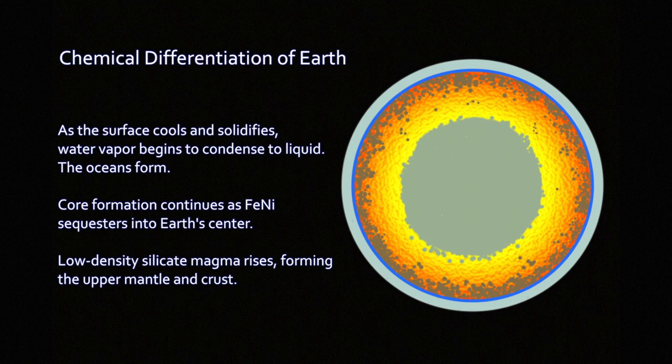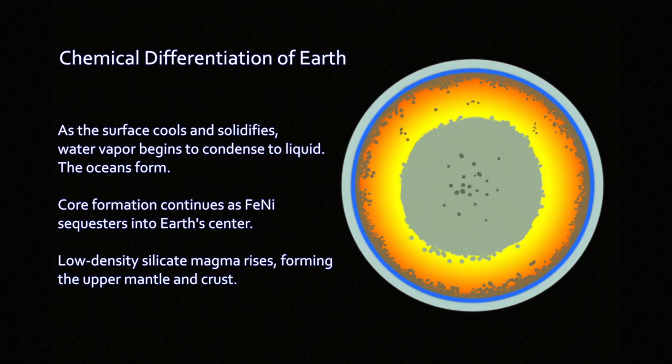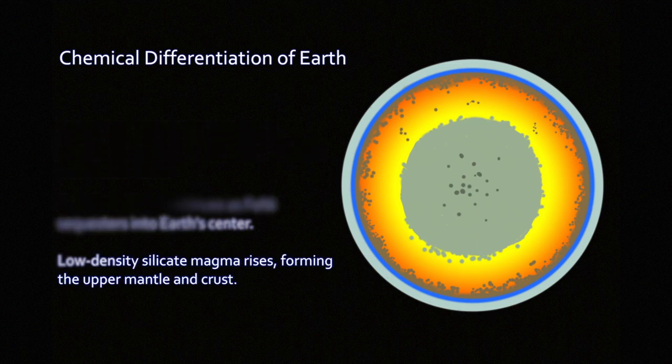So as the crust forms and the oceans begin to pool on the surface, core formation continues. As the core builds up liquid iron and the planet in general cools, and this part's going to happen over the next few hundred million years after accretion.